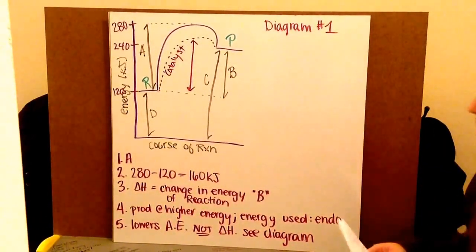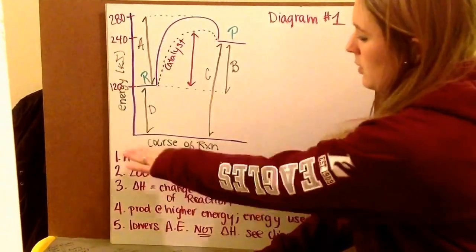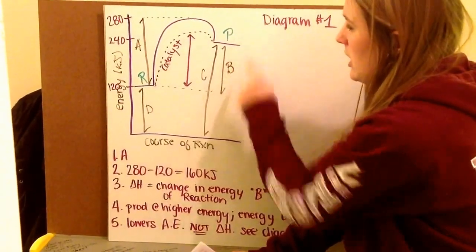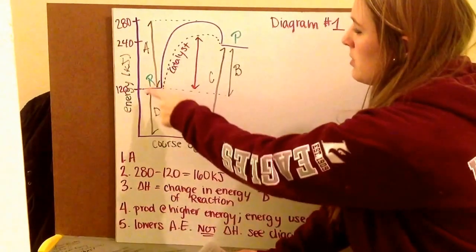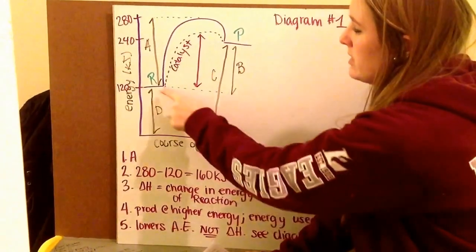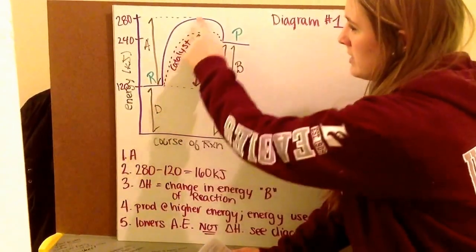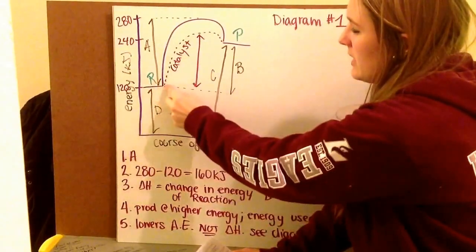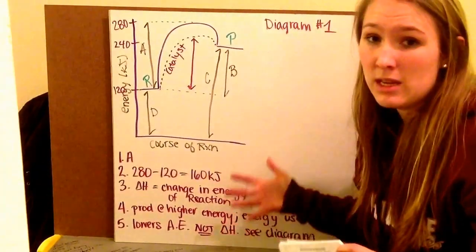Alright, diagram number one, we have a couple of questions to answer. Let's take a moment and look at what our diagram is telling us. We have our course of our reaction and our energy in kilojoules. We have our reactants and then our products. We notice that our products are at a higher energy level than our reactants. We notice how much energy it took to get to our transition state and then down to our products. There's a difference in energy between my reactants and my products. There's a difference in energy between my reactants and my activated complex at the top. And then if I introduce a catalyst, I notice that my activation energy is going to decrease. So that's what we take in from our diagram.